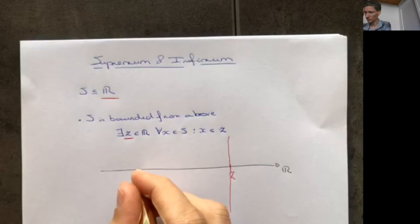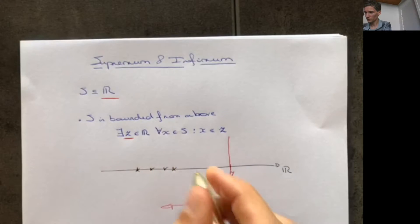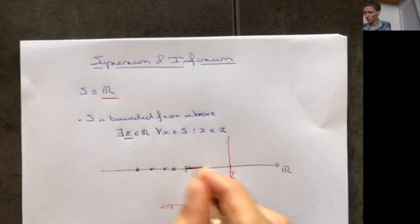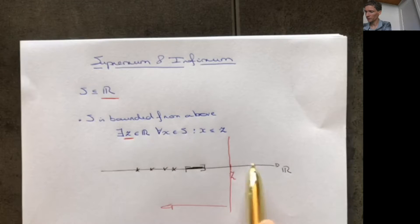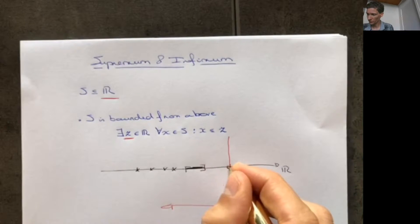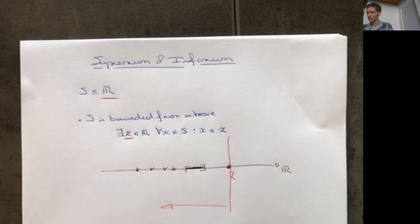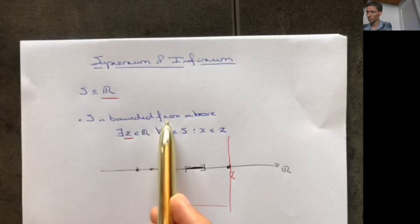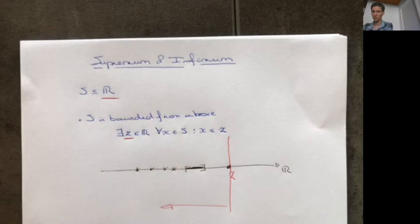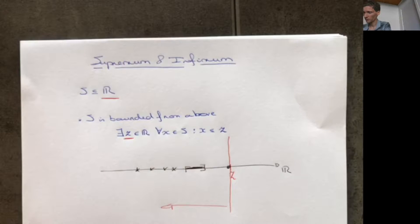So for example, elements in S can be here, and it can also contain some interval of numbers, but it's impossible that there's an element in S that's to the right of Z. It can include Z itself — that's possible — but it should not go beyond Z. So I think it's intuitive: there's a bound on S from above, there's something that's bigger than any element in S.